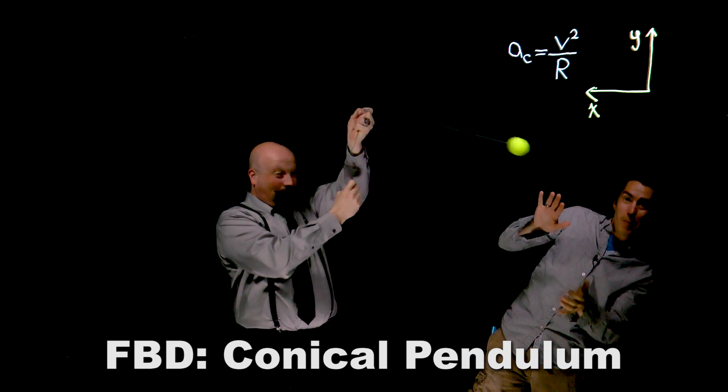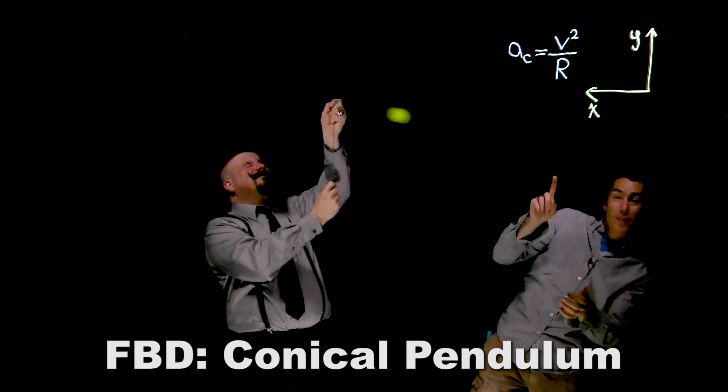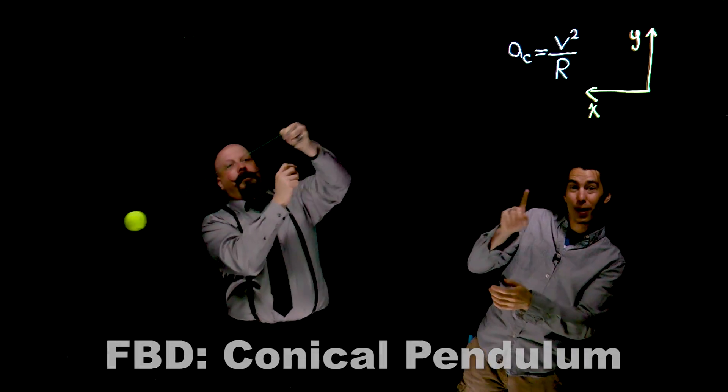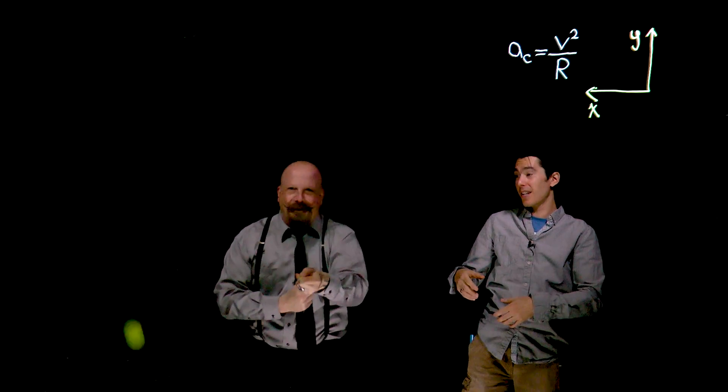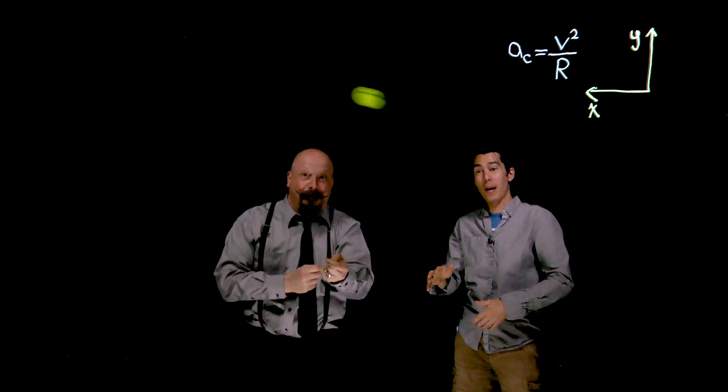So we've been talking about the idea that an object can travel at a constant speed, but because its direction changes, there's going to be an acceleration, and that's the centripetal acceleration. It always points to the center of the circular path.